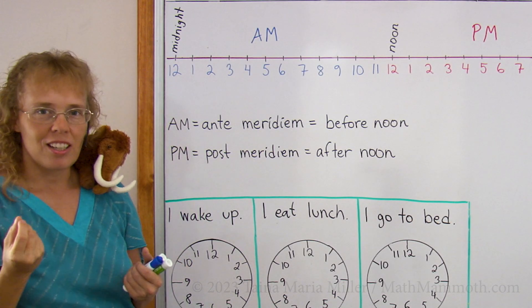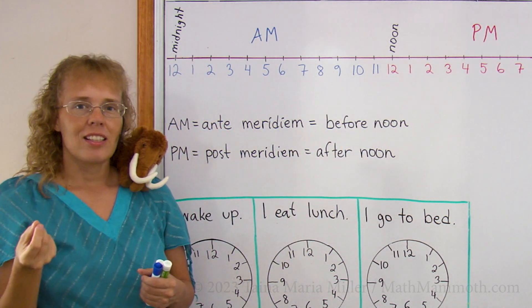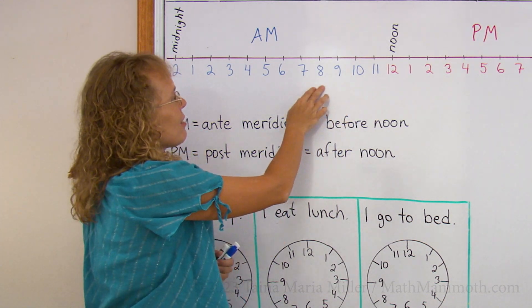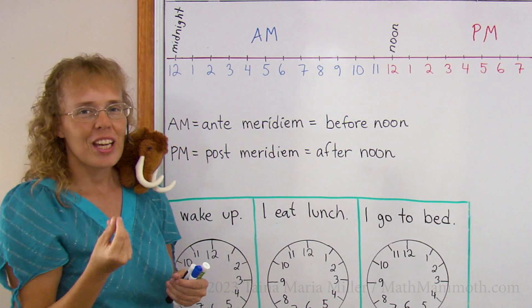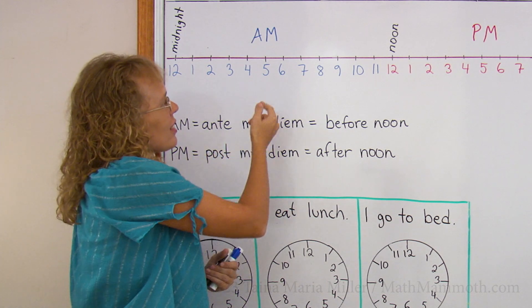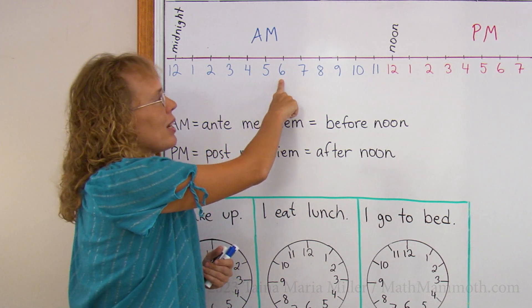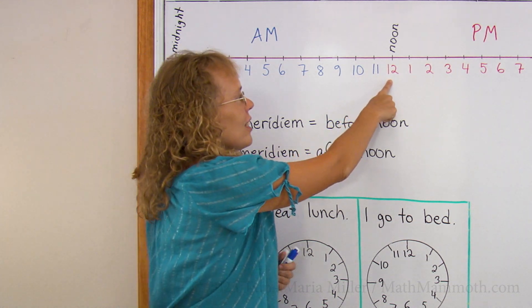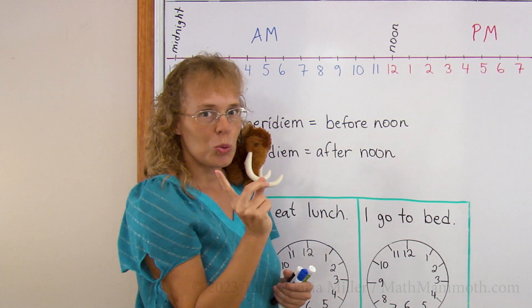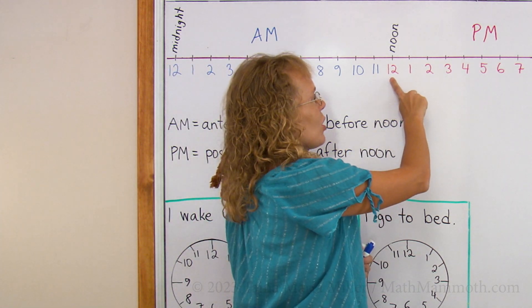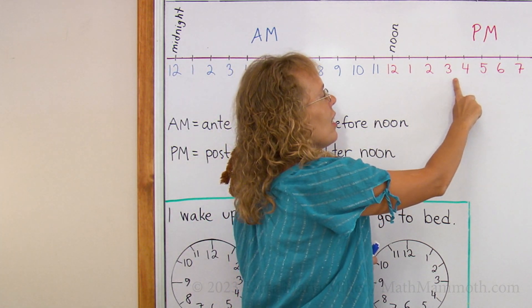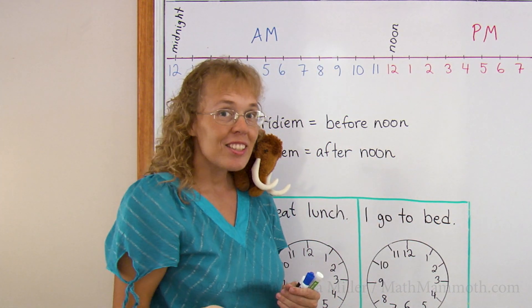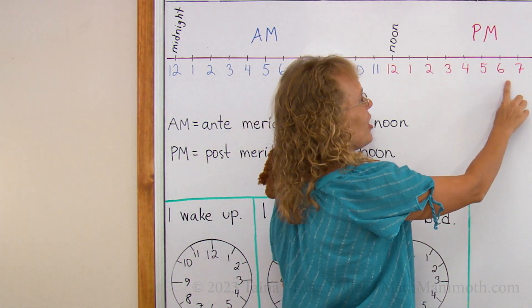Considering the sun, noon is when the sun is at its highest point, like I said. The sun rises somewhere—it depends on your location and the time of the year. But let's say the sun rises at 6 AM. The sun rises and gets higher through these hours. Then the sun is at its highest at noon. And then the sun starts going lower on the sky until it sets, maybe at 6 PM, maybe earlier, maybe later, depending on the time of the year and on your location.